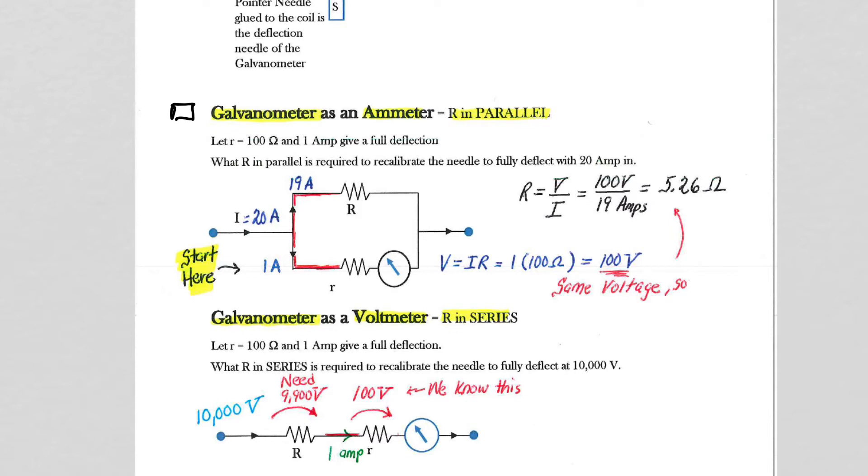If the galvanometer is functioning as an ammeter, so you want to be able to measure the amperage, the current that is flowing in, this 20 amps for example. When you would purchase a galvanometer, you would know the little r value and the amperage that was required based on what you were purchasing out of the box, that if a 1 amp current flowed through this resistance, which was fixed for the galvanometer, 100 ohms, you would get a full-scale deflection.